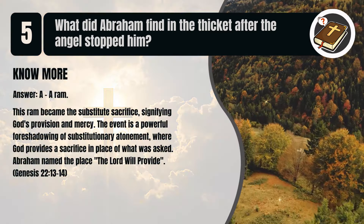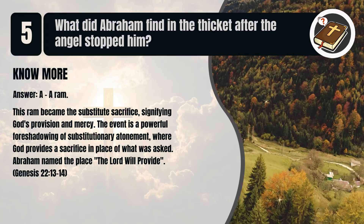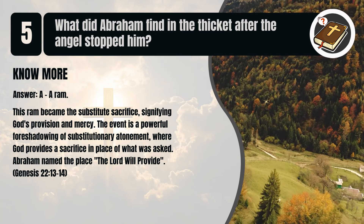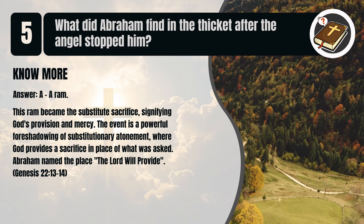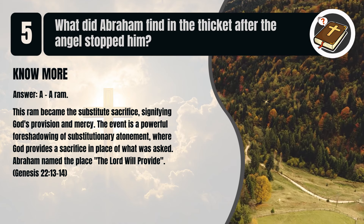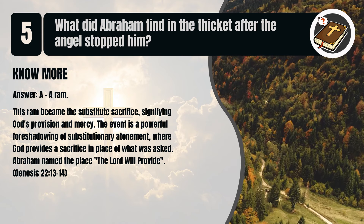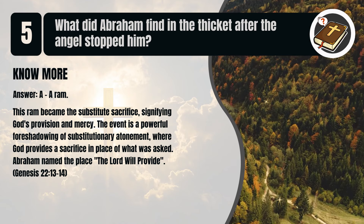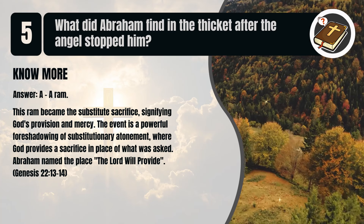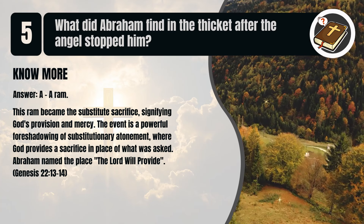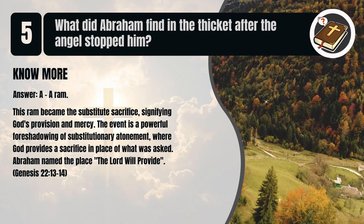That's A. A ram. This ram became the substitute sacrifice, signifying God's provision and mercy. The event is a powerful foreshadowing of substitutionary atonement, where God provides a sacrifice in place of what was asked. Abraham named the place 'The Lord Will Provide.' Genesis chapter 22 verses 13 to 14.